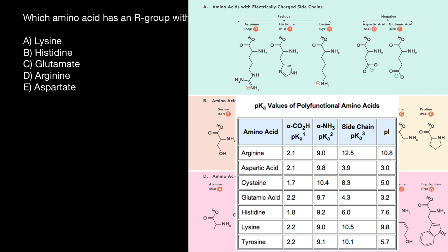For example, let's take arginine: pKa-1 is 2.1, meaning the carboxylic end. At pH 2.1, 50% of this group would have a negative charge and the other 50% would be neutral. pKa-2 is 9.0, meaning the amino end in a solution below pH 9.0 would be protonated and carry a positive charge.